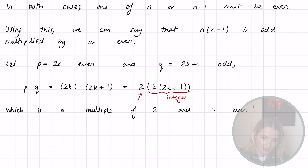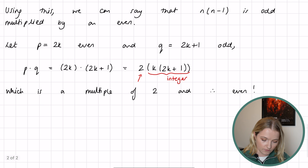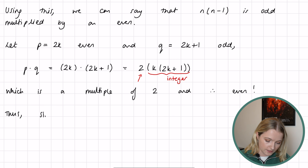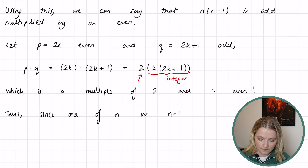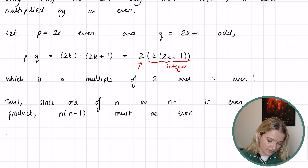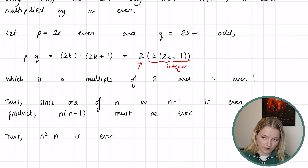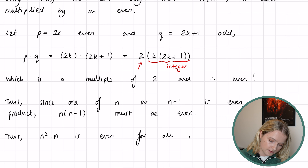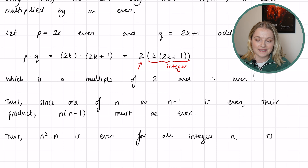Thus, since one of n or (n minus 1) is even, their product n multiplied by (n minus 1) must be even, and therefore n squared minus n is even for all integers n. We can place a little square here to indicate the proof is complete.